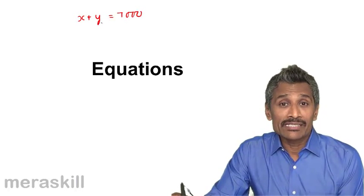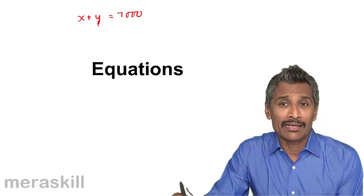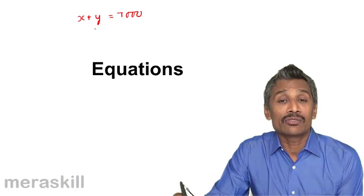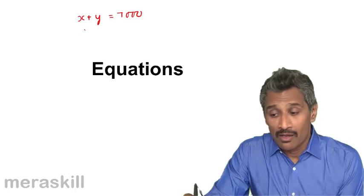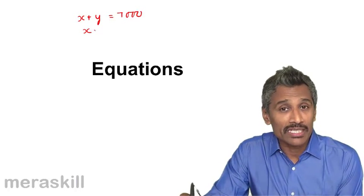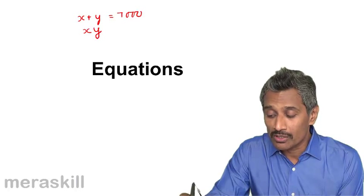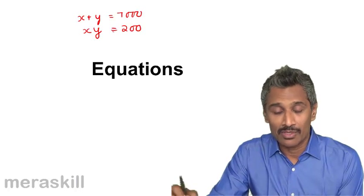Say another example, the product of the number of students and the amount that each one has together is 200 rupees. So we say if there are x students and the amount that each one has is y, the product of these two is 200. So we say x times y is 200.